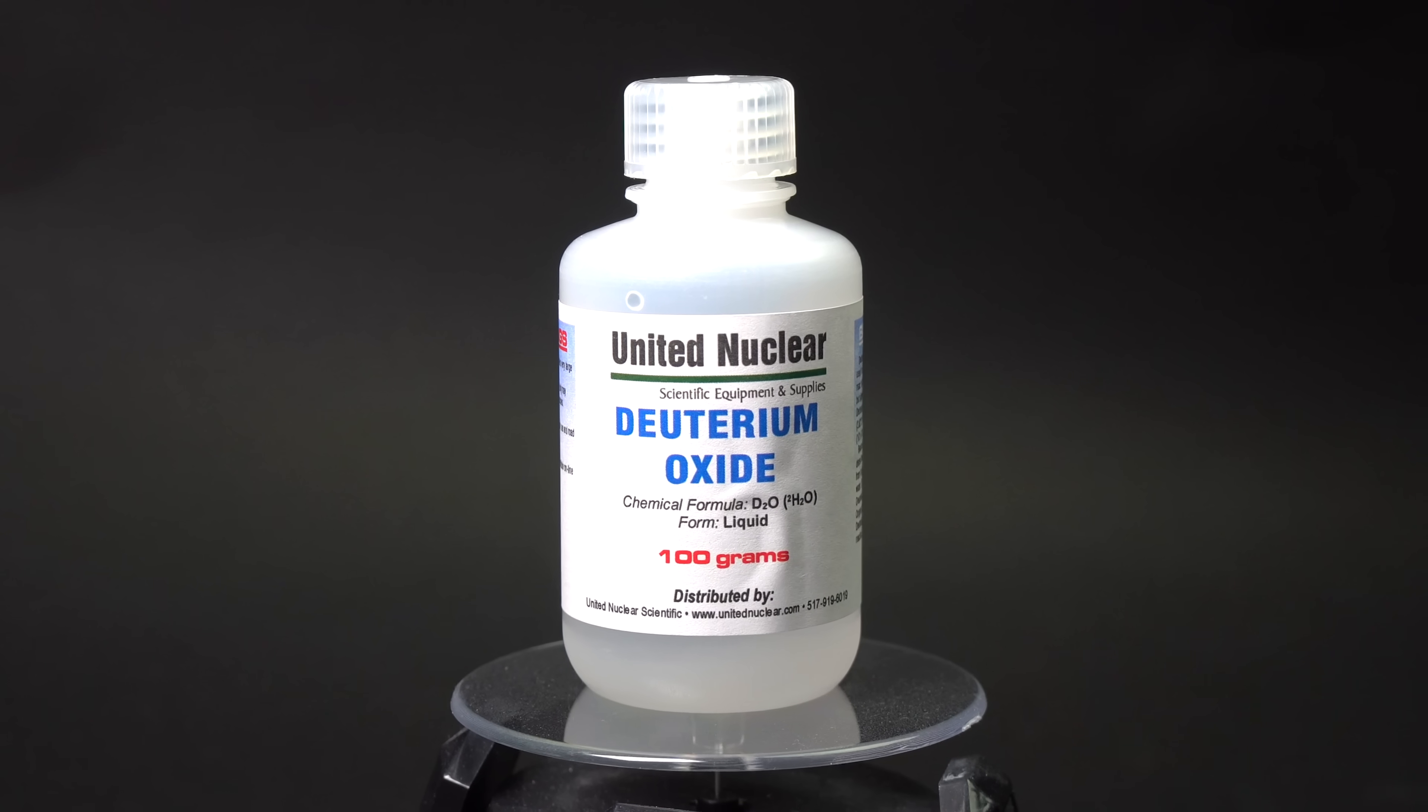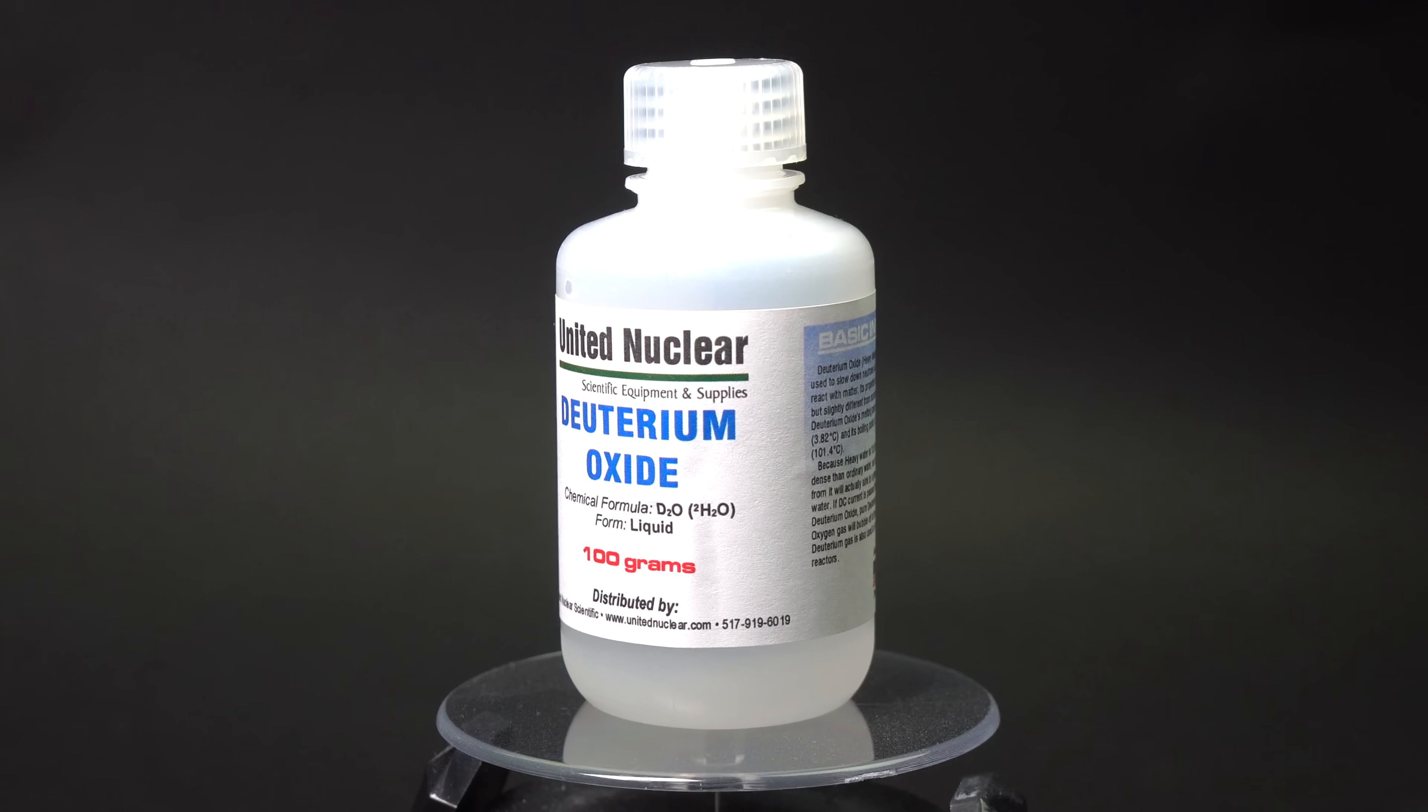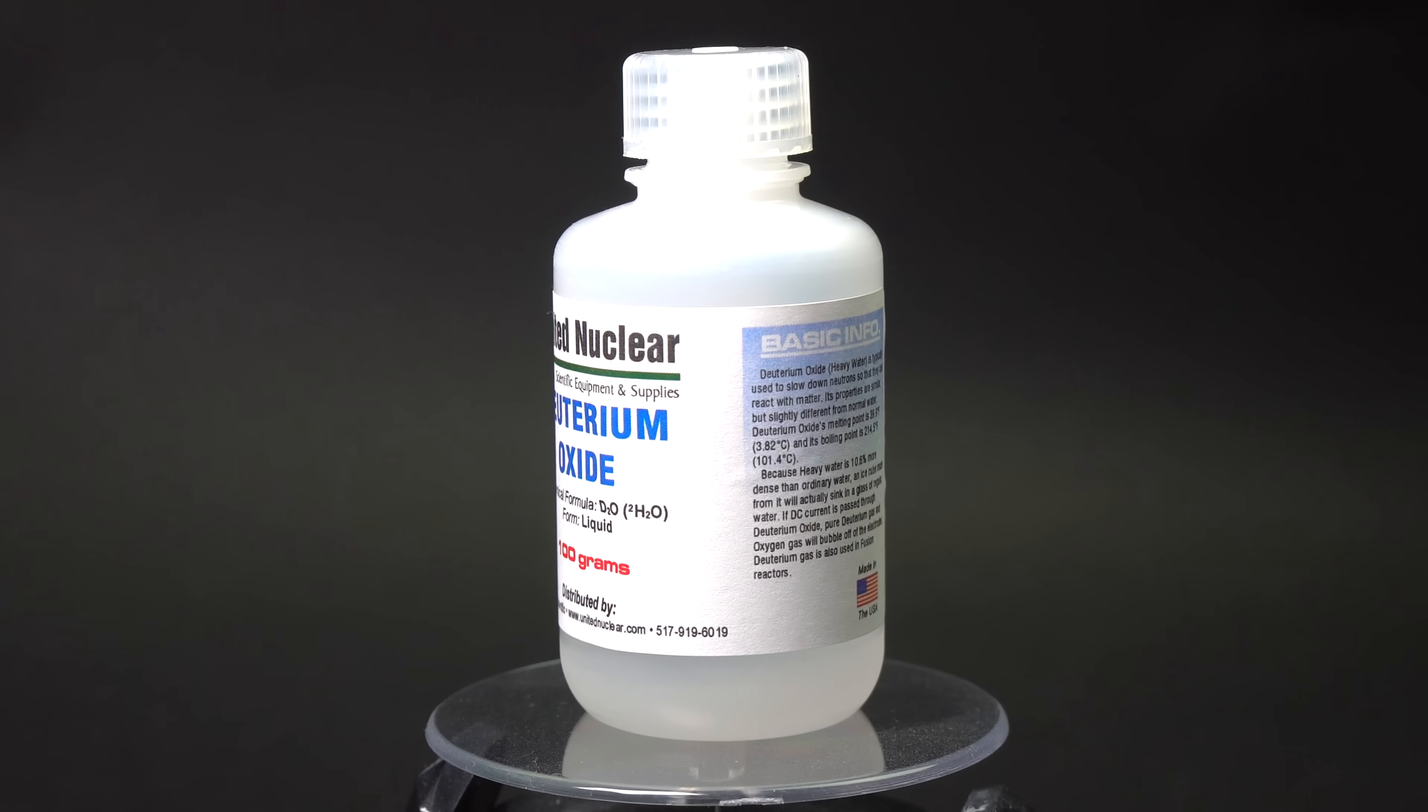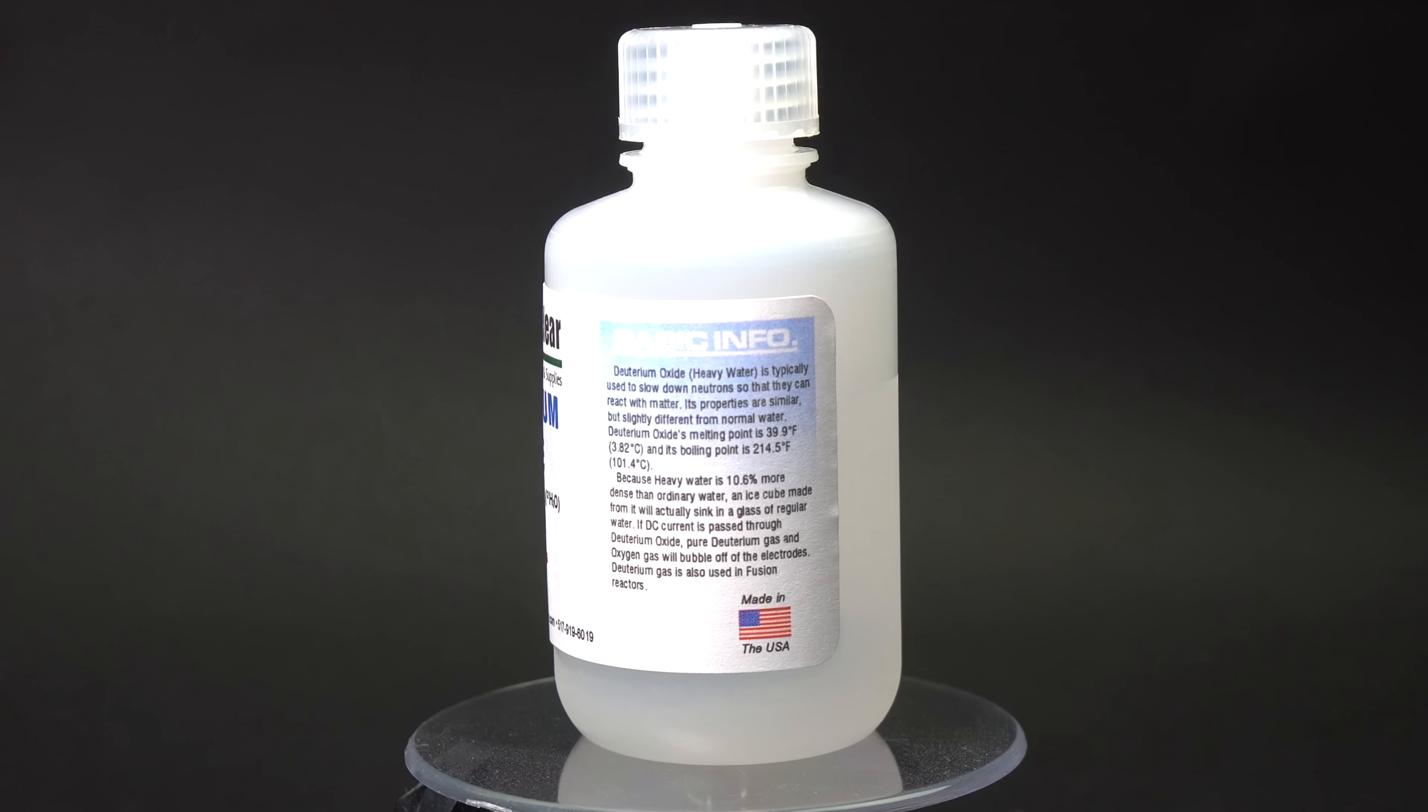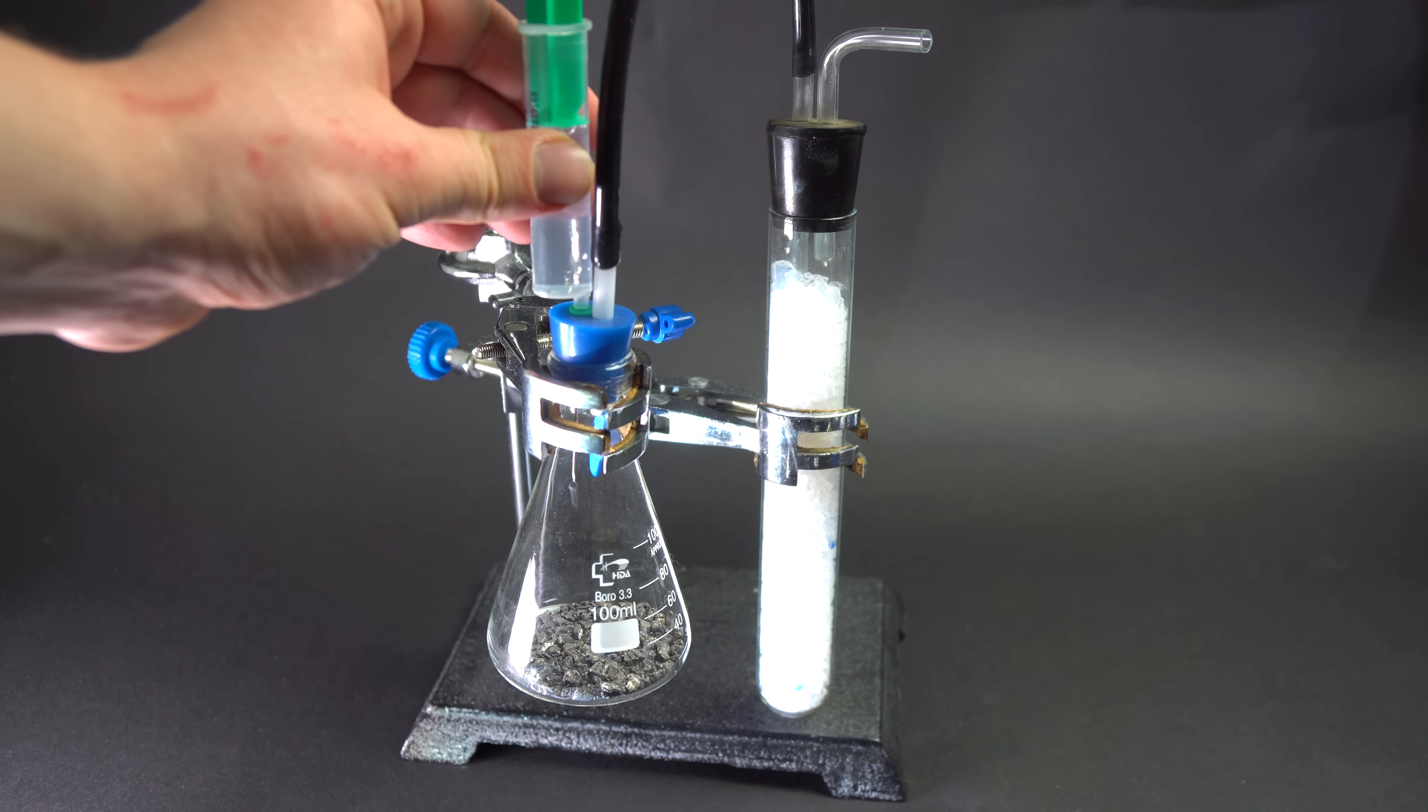Now, we have considered physical properties of heavy water. Now, let us see how different chemical properties of deuterium is from hydrogen. First, we need to obtain it.